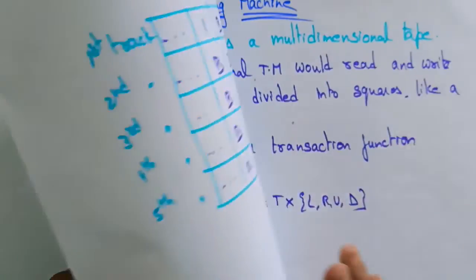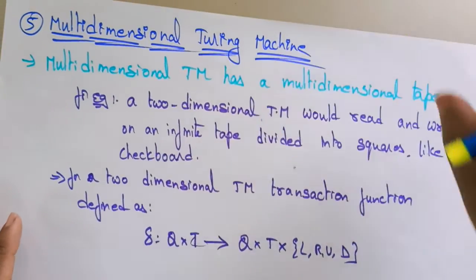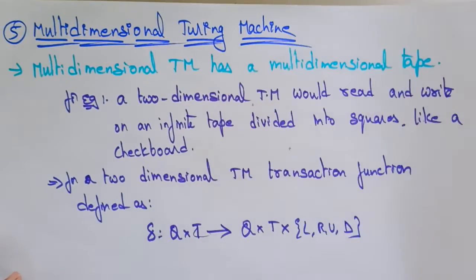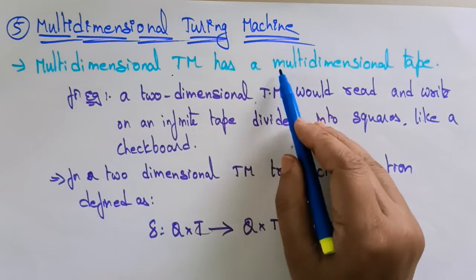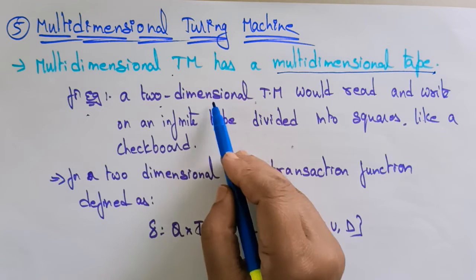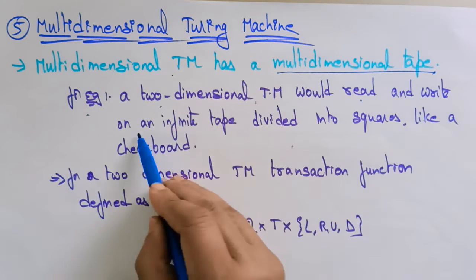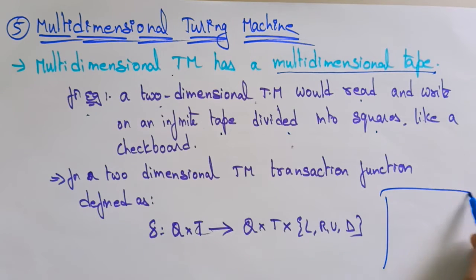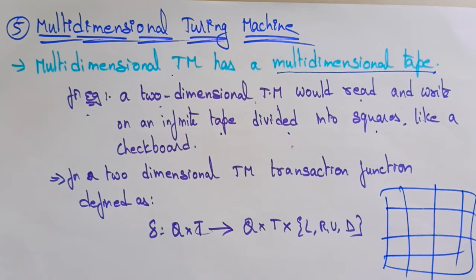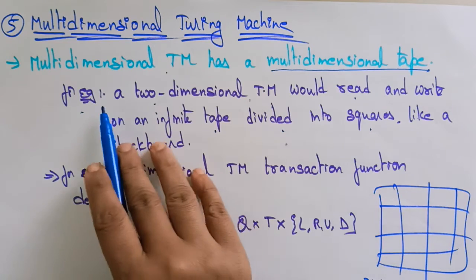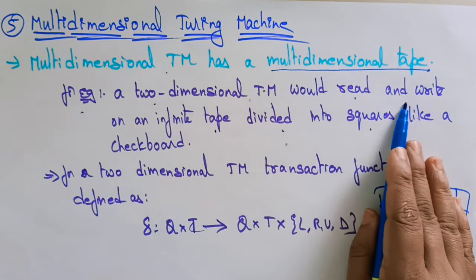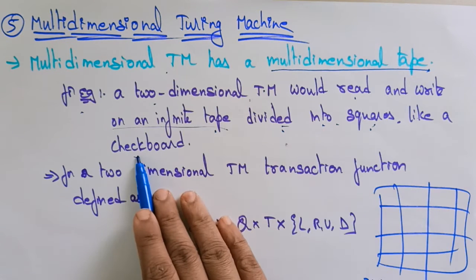The last variation of the Turing machine is the multidimensional Turing machine. Multidimensional means each cell is handling multiple dimensions. The multidimensional Turing machine has a multidimensional tape. For example, a two-dimensional Turing machine would read and write on an infinite tape divided into squares like a chessboard — a two-dimensional matrix with rows and columns.